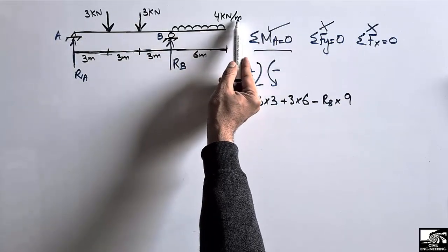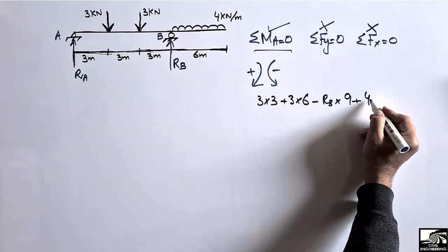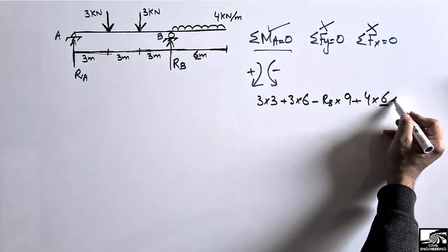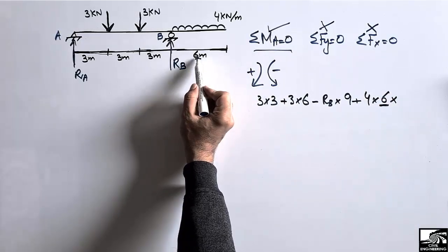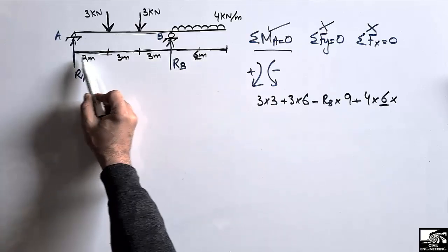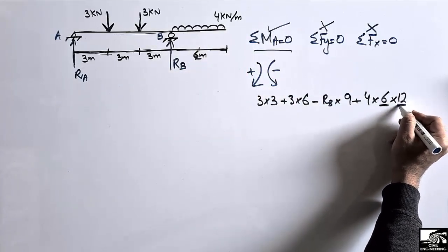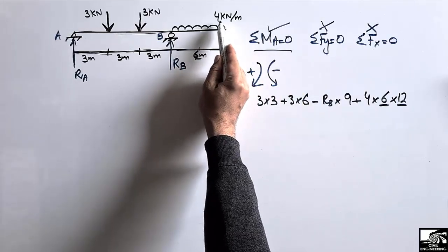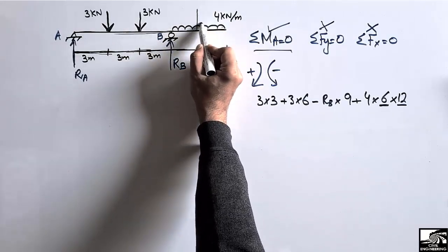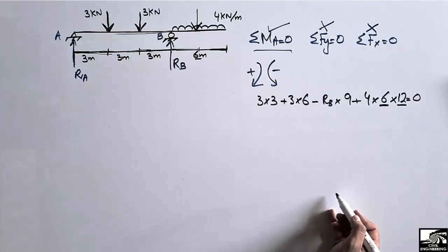The distributed load of 4 kN/m over 6 meters also creates a clockwise moment about A. Converting it to a point load: 4 × 6 = 24 kN acting at the midpoint of the distributed load. The moment arm is 9 + (6/2) = 9 + 3 = 12 meters. So the moment is 4 × 6 × 12 = 288 kN·m (clockwise, positive).